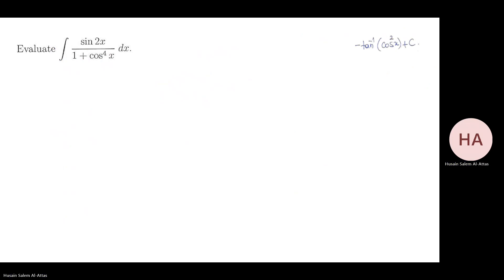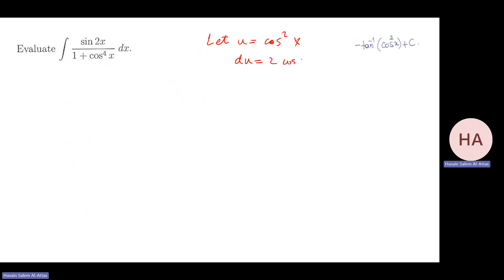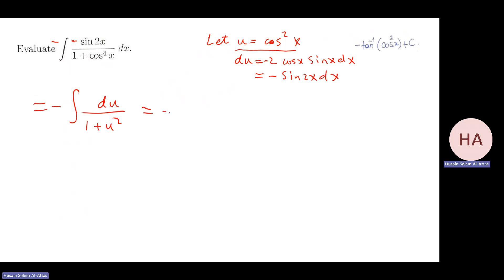Next problem: integral of sin(2x) over (1 + cos⁴x). The trick here is that d/dx(cos²x) = -2 cos x sin x = -sin(2x). So I need a minus sign inside and a minus outside. Letting u = cos²x, du = -sin(2x) dx, the integral becomes minus du over (1 + u²), which integrates to minus arctan(u) + C = minus arctan(cos²x) + C.